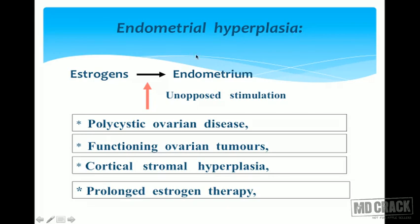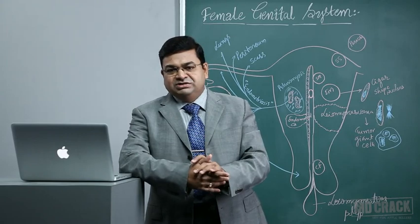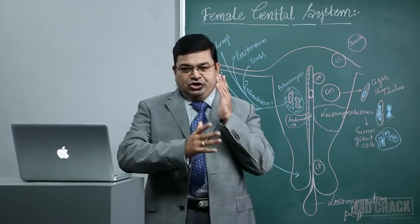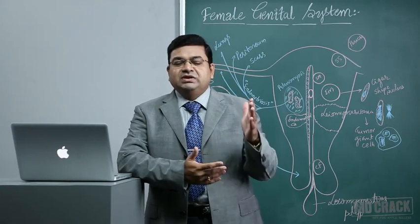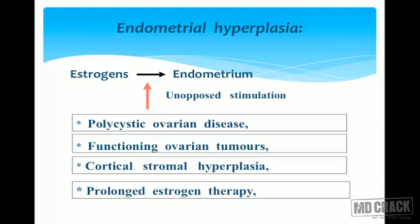With excessive estrogen effect, endometrial hyperplasia can develop — most often due to unopposed excessive stimulation of the endometrial glands by estrogens. Causes include polycystic ovarian disease (PCOD), functioning ovarian tumors (most importantly granulosa cell tumors known for secreting excess estrogens), cortical stromal hyperplasia with excessive estrogen secretion from the adrenal cortex, and prolonged iatrogenic estrogen therapy. These patients have a hyperestrogenic status and can also suffer from various malignancies.